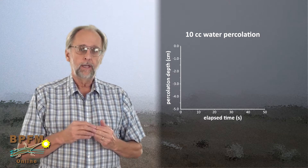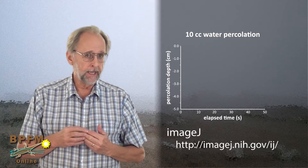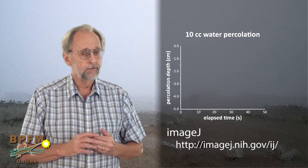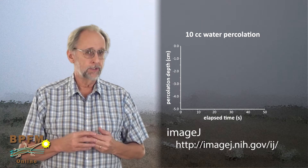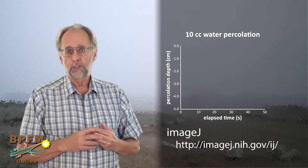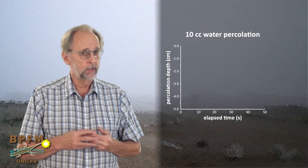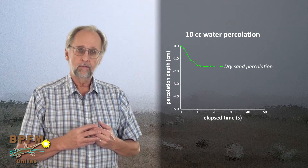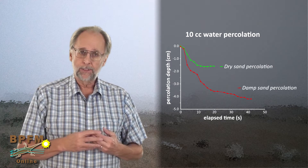We're going to use a very handy image analysis program called ImageJ. It's very powerful, it's open source, and it's free. Here's the website where you can go to get a copy for yourself. We've used ImageJ to measure the distance of the percolating front of water from the top of the soil. Here are the results for the dry sand in green, and here are the results for the damp sand in red.